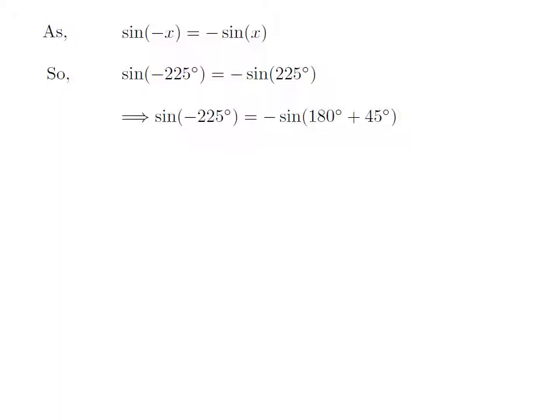As 225 degrees is equal to 180 degrees plus 45 degrees, sine of minus 225 degrees is equal to minus sine of 180 degrees plus 45 degrees.